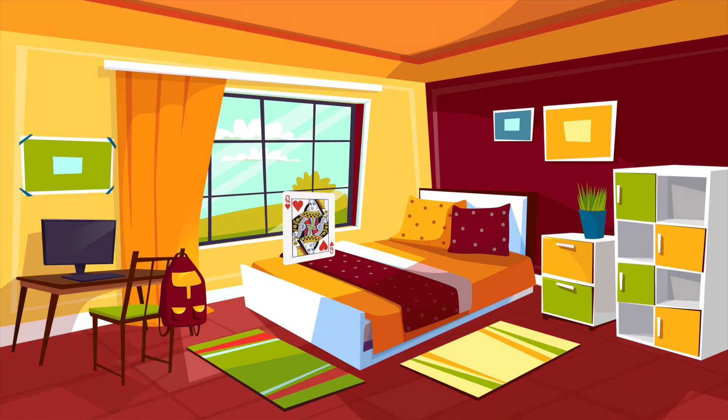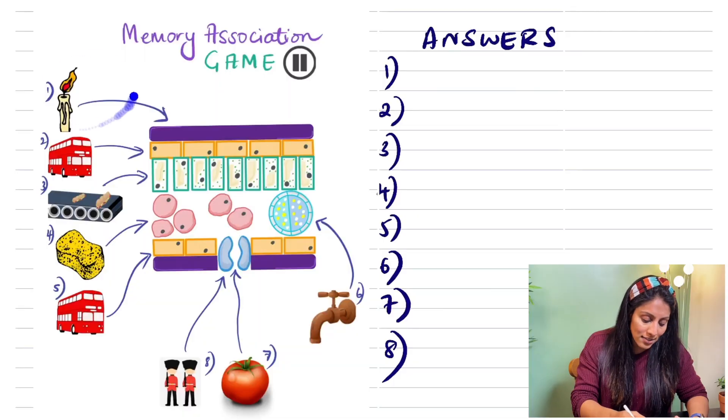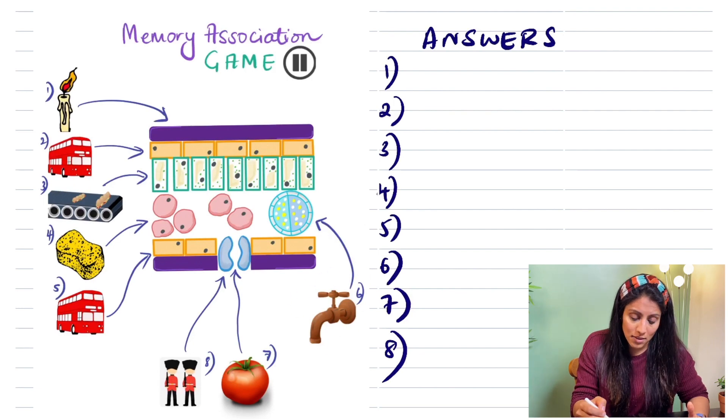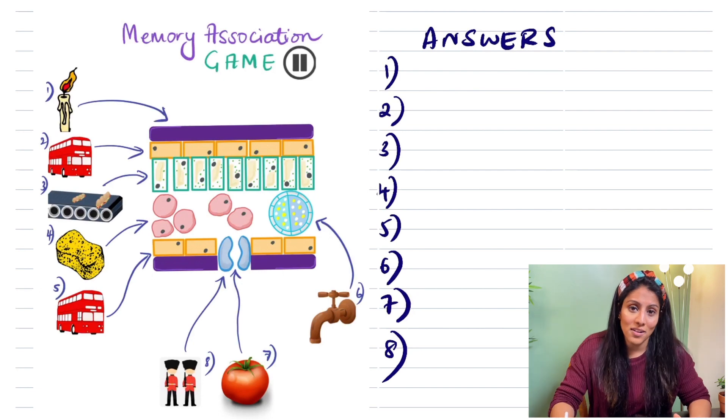I have a little game for you called the memory association game. Magicians use this technique to remember all the cards in a deck — they take a familiar space like their bedroom and place each card routinely around it, connecting the dots until they can remember the whole deck. In the same way, I used little pictures to represent different cells as a memory association technique: the waxy candle, the double decker bus, the food factory, the sponges, the double decker bus again, the taps or pipes in the house, tomatoes, and guards. Pause the video and see if you can remember the names of all the parts.